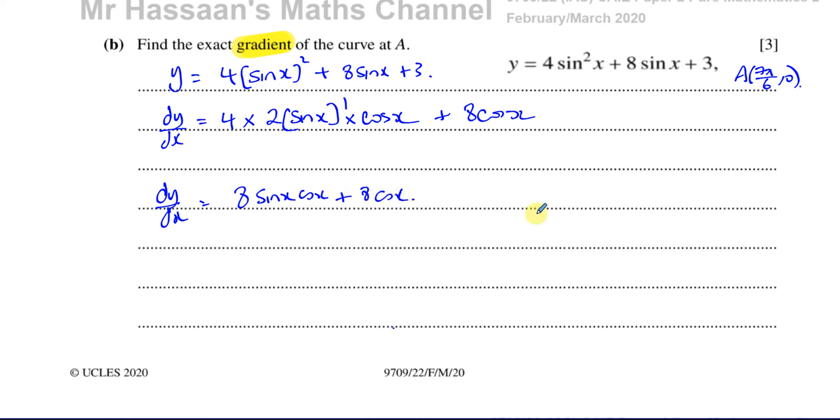And we want to find the gradient when x equals 7 pi over 6. So we could use the double angle formula, and I could change this into 4 sine of 2x, half the coefficient, double the angle. But you don't really need to. So the gradient at A is going to be 8 times the sine of 7 pi over 6, times the cosine of 7 pi over 6, plus 8 times the cosine of 7 pi over 6.